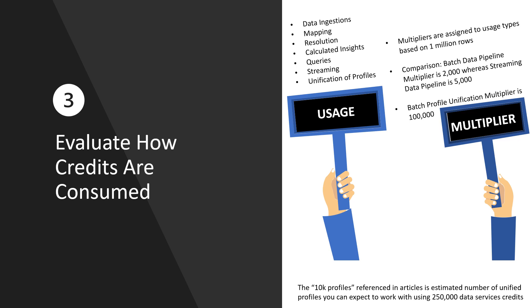Number three, evaluate how data service credits are consumed. You use data service credits in the Data Cloud whenever you interact with the data. Those interactions could be in the form of data ingestion, data mapping, resolution, calculated insights, queries, and other things. There are multipliers applied based on the usage type. For example, it costs two and a half times as many credits if you ingest data via a streaming data pipeline versus a batch data pipeline.